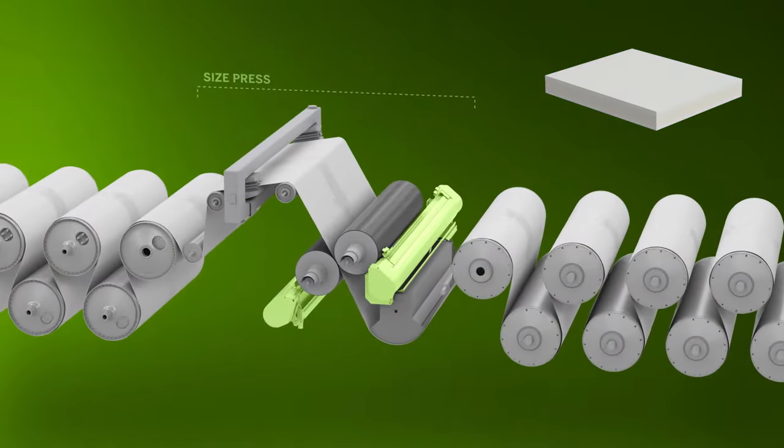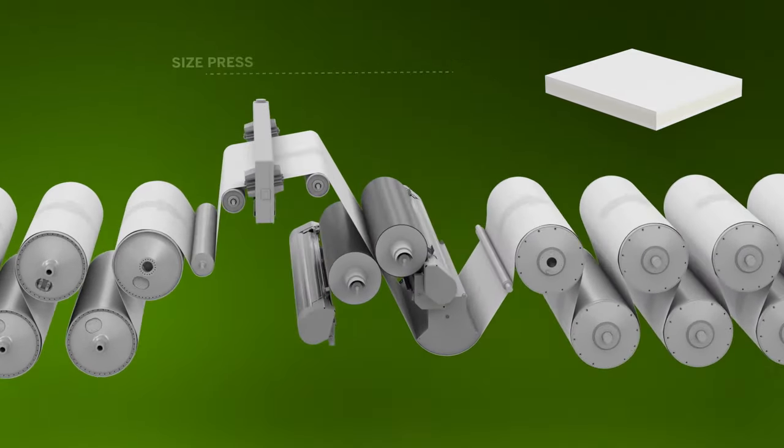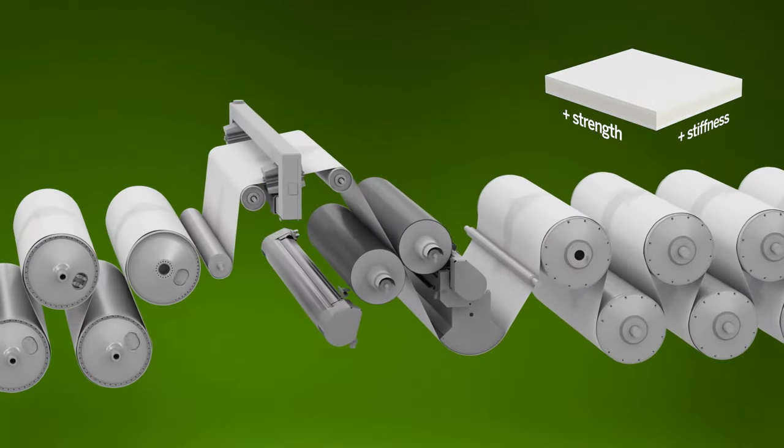In the surface sizing section, a slurry of starch is applied to both sides of the web to improve the board's surface strength and stiffness.